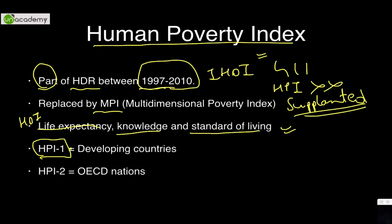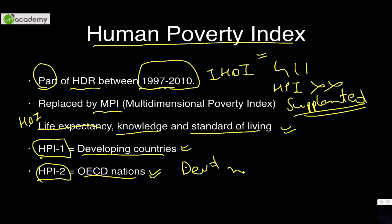HPI-1 is calculated for developing countries, since poverty is less prevalent in developed nations. HPI-2 was devised for OECD countries — the Organisation for Economic Co-operation and Development — which are developed nations with high per capita income, high life expectancy, high employment, and high literacy rates. So HPI-1 is for developing countries and HPI-2 is for OECD nations.